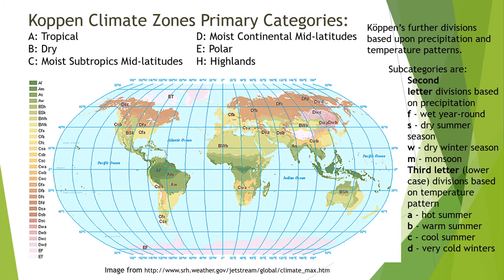Based on these observed trends in global air currents and precipitation patterns, a scientist named Vladimir Köppen divided the globe into six major climate categories. These include tropical, dry, moist subtropics, mid-latitudes, moist continental mid-latitudes, polar, and then a special region called highlands.